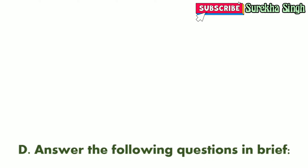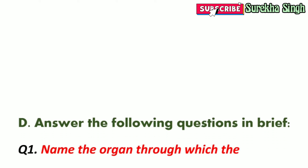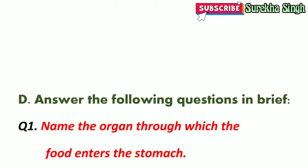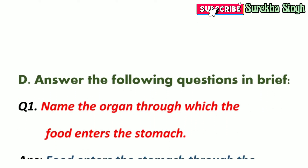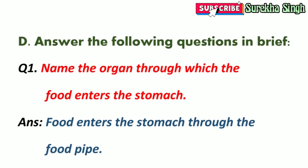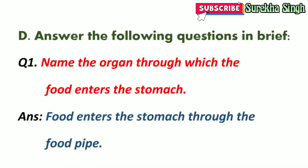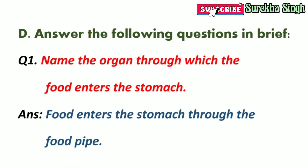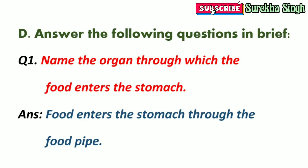Question D: Answer the following questions in brief. 1. Name the organ through which the food enters the stomach. The food enters the stomach through the food pipe.